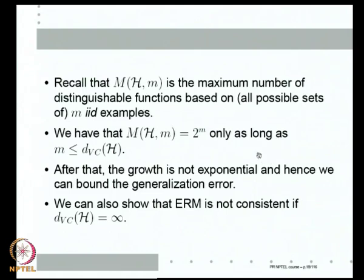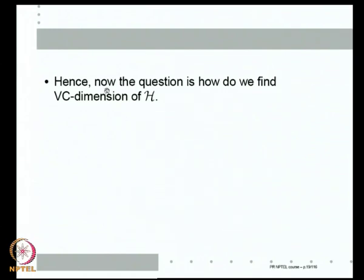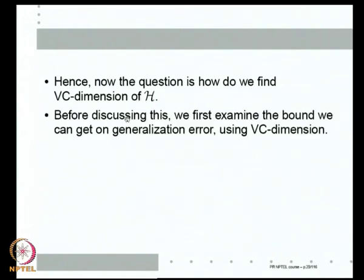This only shows that if VC dimension is less than infinity, ERM is consistent, since this is only a bound. If VC dimension is infinity, we cannot bound the generalization error at all. The question is: how do we find the VC dimension of H? Given a family of classifiers — hyperplane classifiers, axis-parallel rectangles, whatever — we first want to know whether the VC dimension is less than infinity. We will also examine, given a finite VC dimension, exactly what the generalization error bound is, and derive a very interesting bound on the risk of any classifier.